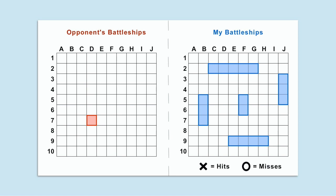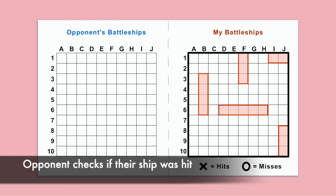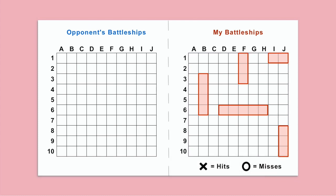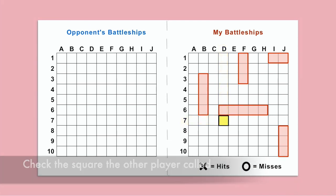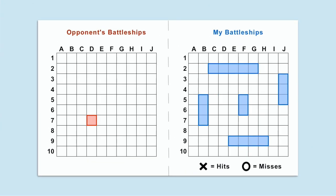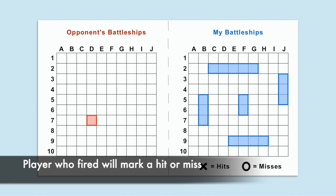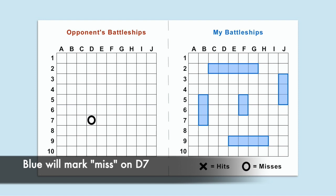After the start player names a square to fire at, the other player will look at their My Battleships grid and see if their opponent hit part of one of their ships, by locating the column and row that intersect at that square. If their ship is hit, they will say hit. If their ship is missed, they will say miss. The start player will then mark the grid — an X for a hit, or an O for a miss. In this case, blue missed, so they will put an O on D7.